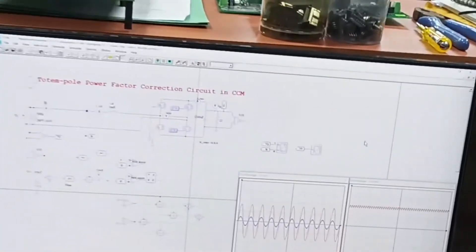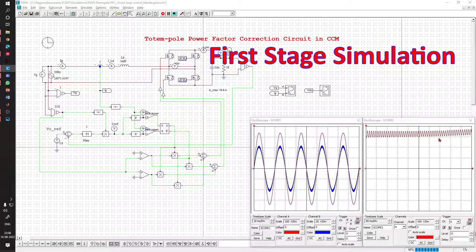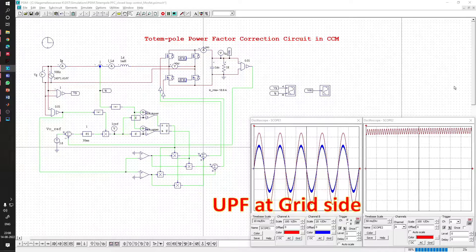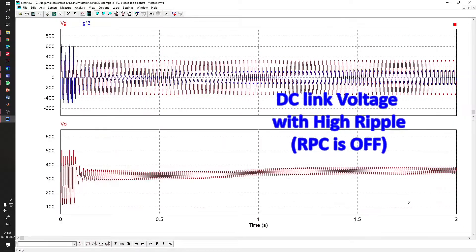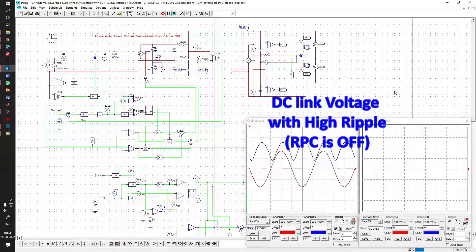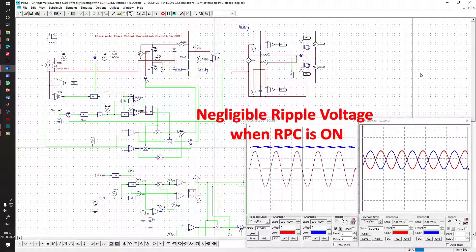A detailed simulation study is performed in PSIM software. The first-stage simulation results show that totem pole PFC maintained unity power factor. Without RPC, huge ripple voltage is present at DC-link. When RPC is activated, DC-link voltage becomes constant.